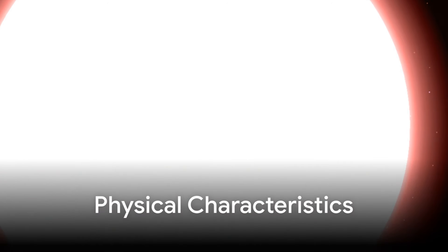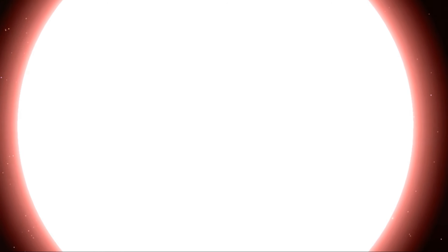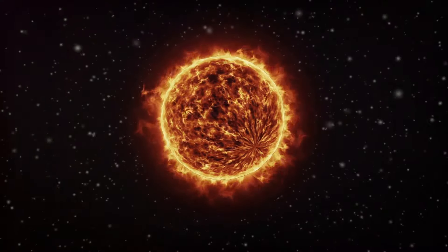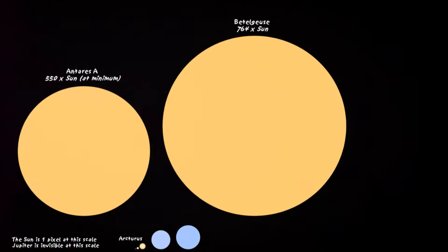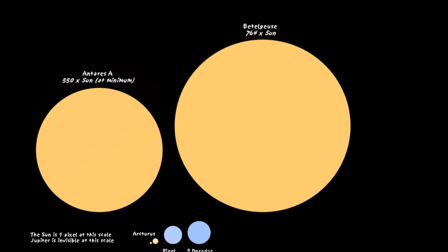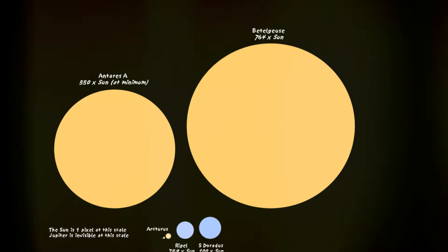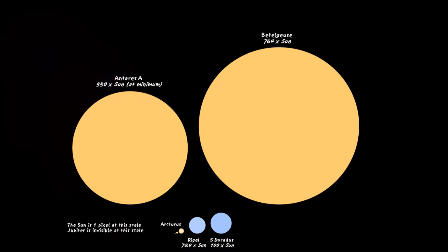When it comes to stars, size really does matter. It can tell us a lot about its life cycle, its energy output, and even its eventual fate. And Betelgeuse? Well, it's a cosmic heavyweight champion. With a radius roughly 700 times larger than our sun and a mass about 10 to 20 times that of the sun, it is classified as a red supergiant.